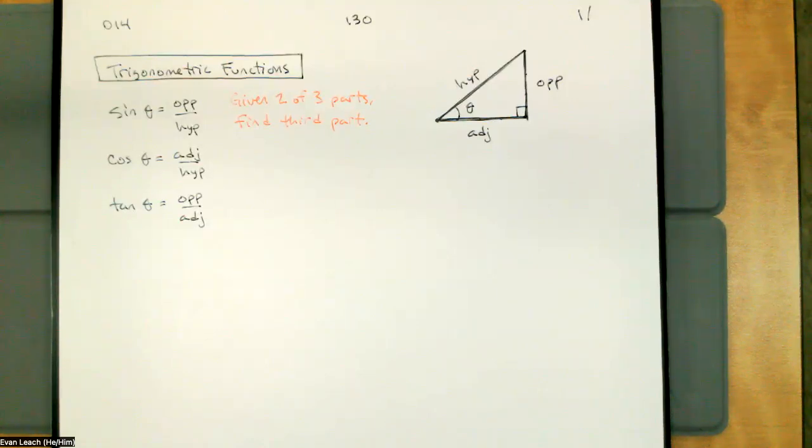Also, notice that they're all set up as ratios. Sine of theta is opposite over hypotenuse. Cosine of theta is adjacent over hypotenuse. Tangent of theta is opposite over adjacent. A song doesn't get stuck in your head because you heard it once. A song gets stuck in your head because you heard it incessantly. So we have a two out of three game and it's set up with a ratio. So we need to explore the relationship between multiplication and division.